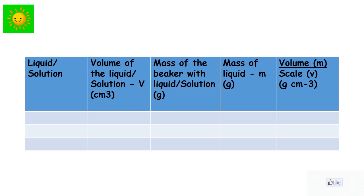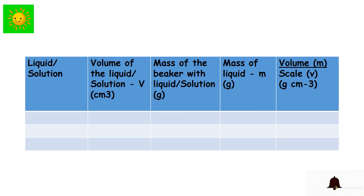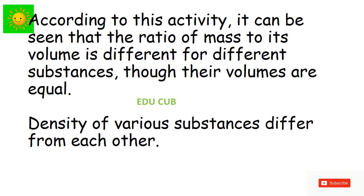In the same way, measure 250 milliliter of coconut oil and kerosene separately into the same beaker and measure their masses. Note that the beaker and measuring cylinder should be well cleaned and dried before measuring coconut oil and kerosene. Tabulate your readings and work out the calculations. According to this activity, it can be seen that the ratio of mass to volume is different for different substances even though their volumes are equal, so the density of various substances differs from each other.